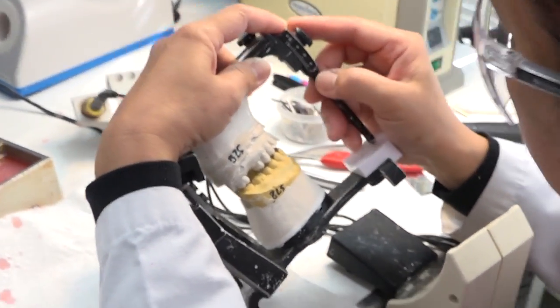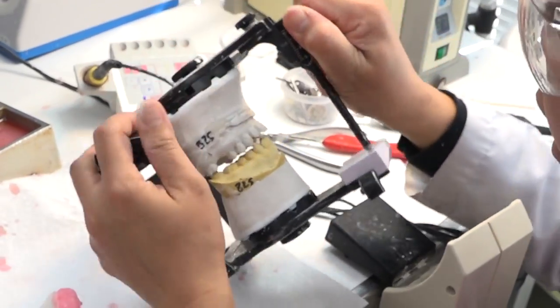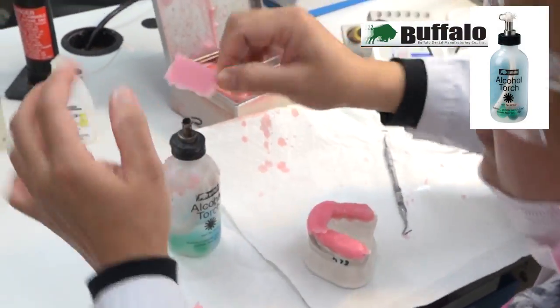Put model in articulator and increase bite to the right degree. Add soft pink number 3 wax to the model.